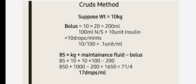Now I will discuss a crude method of DKA management when you are at a basic health unit with lack of equipment, difficulty transporting the patient, or a far-away tertiary care center. Suppose weight is 10 kg: give a bolus in the first hour with 20 ml per kg in 100 ml of normal saline, add 10 units of insulin, and start the drip at the same rate as the patient's body weight — so 10 drops per minute. Fluid calculation is the same as mentioned earlier. With proper charting, you will manage the patient with a 100% cure rate, inshallah. Assalamu Alaikum.